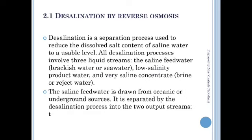The process in which we are removing ions or salts from the water is called desalination. It is a separation process used to reduce the dissolved salt content from saline water to convert it into a usable level. Saline water, such as sea water, contains a lot of dissolved sodium chloride. Removing that dissolved salt, which cannot be removed by filtration, is called desalination.